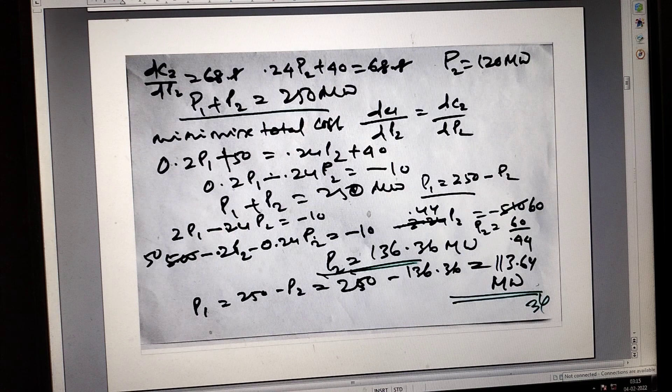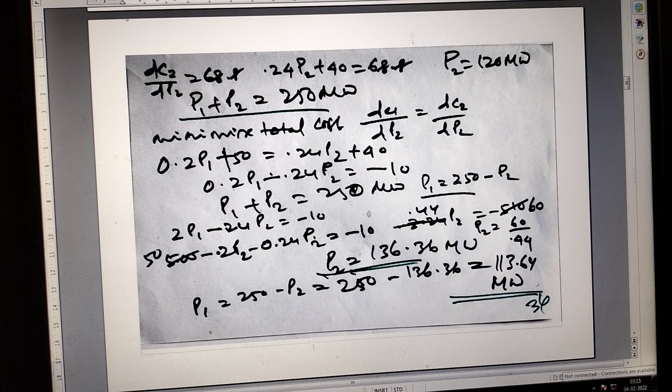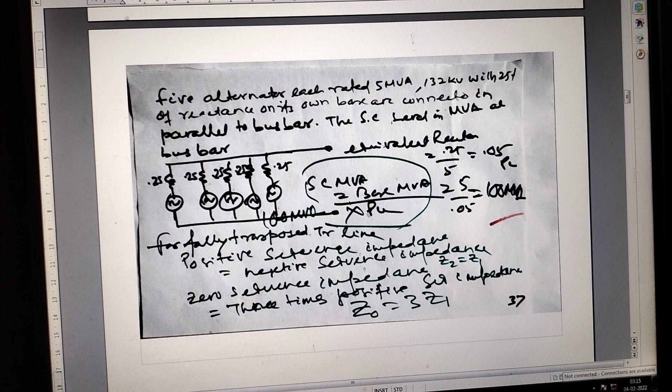The dimension here DC1 by DP2 is like this: P1 is coming 113.64 and P2 is coming 126.36. Here five generators alternate in parallel, you have to parallel.